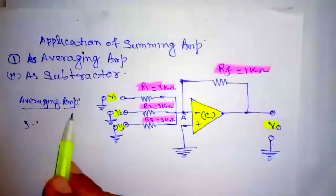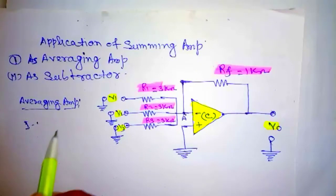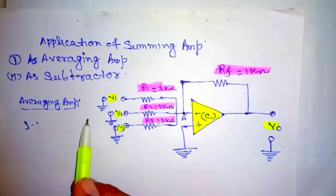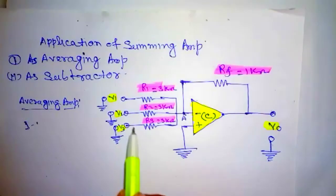Averaging Amplifier. A summing amplifier can be used to provide an output which is equal to the average of input voltages. Then this circuit is called Averaging Amplifier. For this, the summing amplifier has to fulfill two conditions.